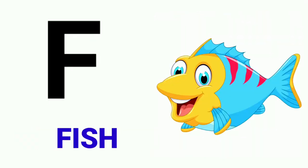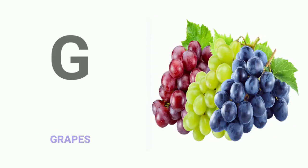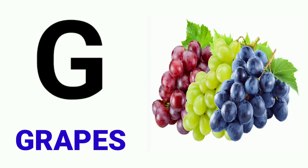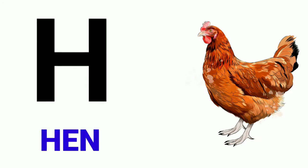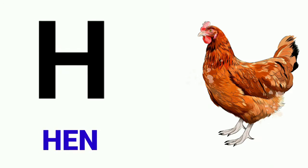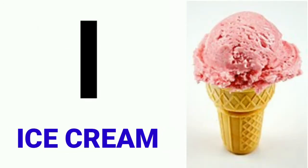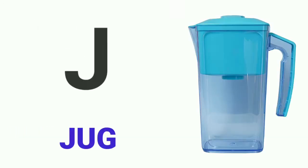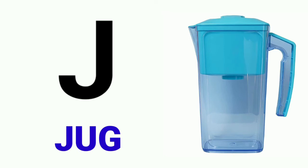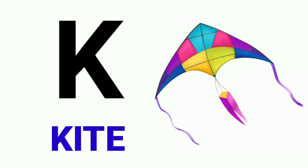F for fish, G for crabs, H for hen, I for ice cream, J for jug, K for kite.